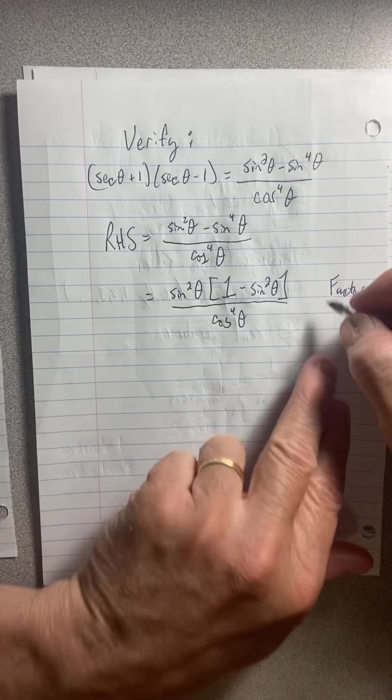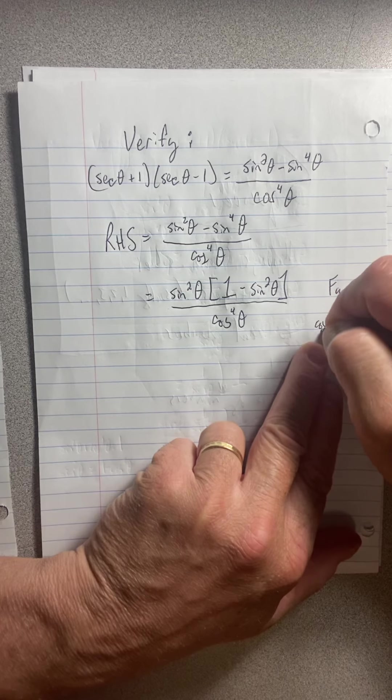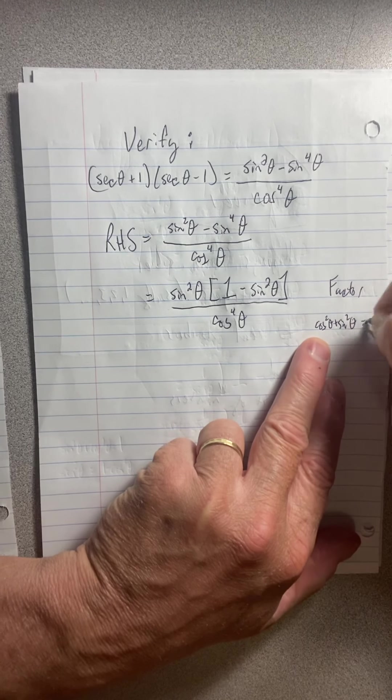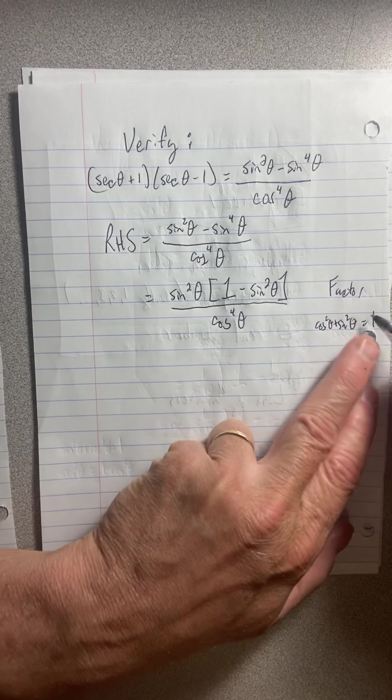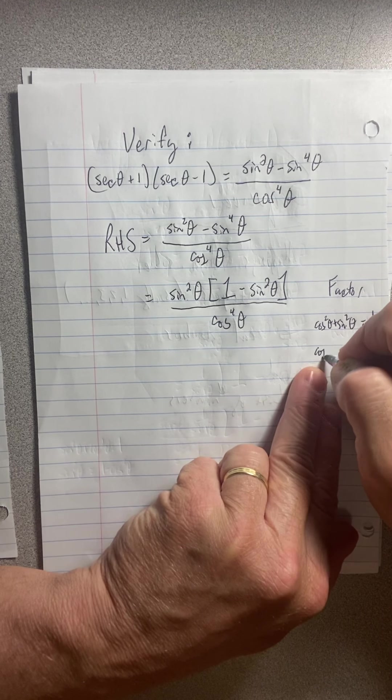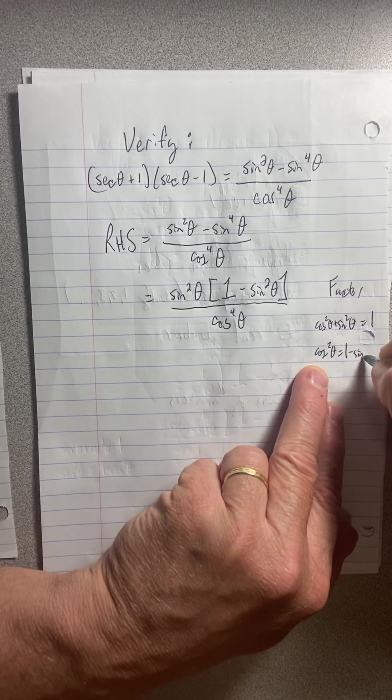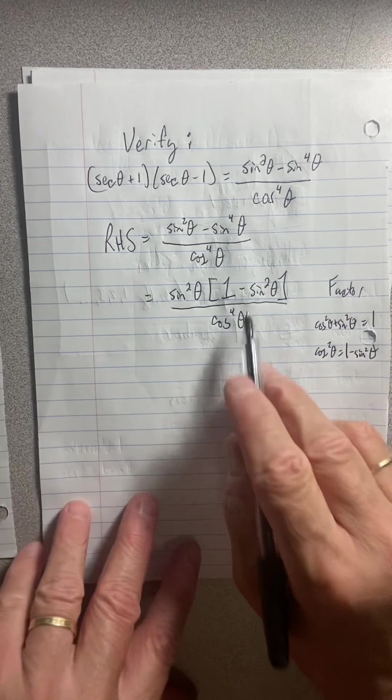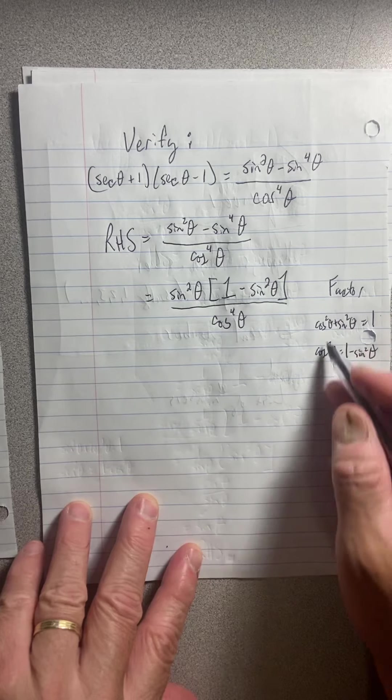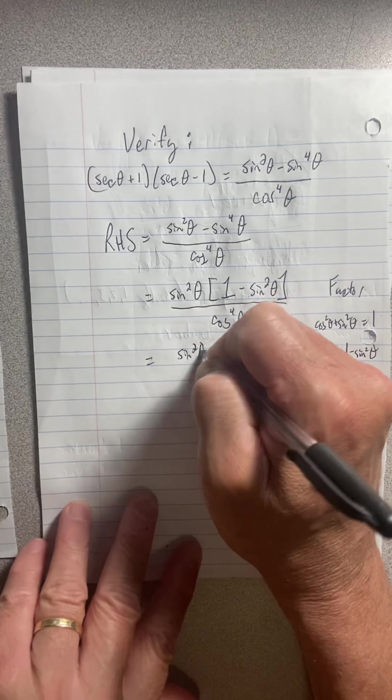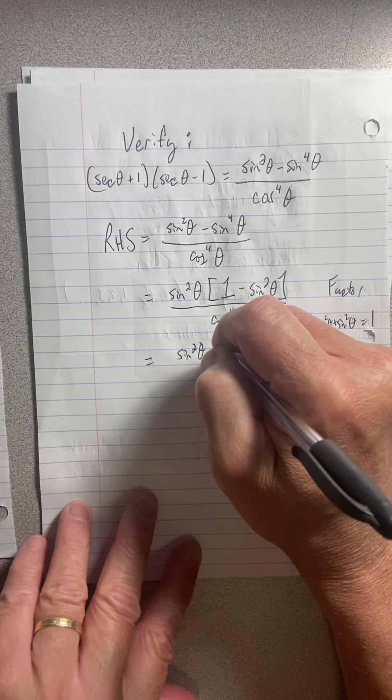Oh this is a Pythagorean right? The Pythagorean says cos squared theta plus sine squared theta equals one. But then if I subtract the sine squared over here then I'm left with cos squared theta is equal to one minus sine squared theta. So that one minus sine squared theta by this justification here is the same thing as cosine squared theta.